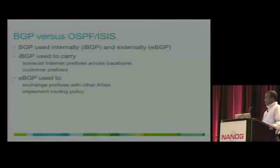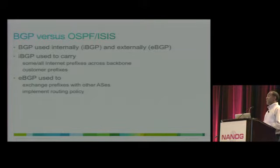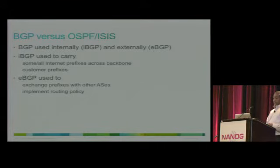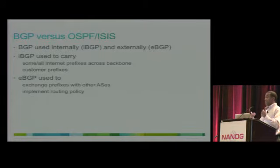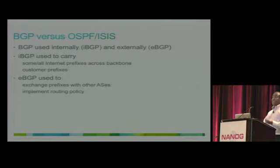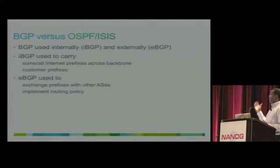Internally, you use IBGP, and externally EBGP. IBGP for internal use carries customer prefixes and some internal prefixes, particularly towards the edge. For edge devices, instead of carrying them in IGP, you can carry them in IBGP. But the prefixes you carry in IBGP do not necessarily go to your EBGP updates — and usually they don't.